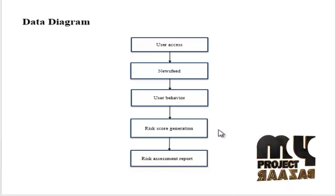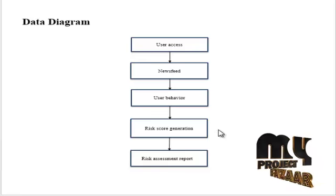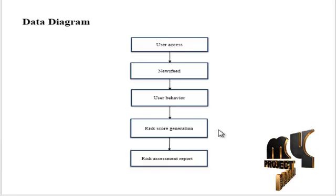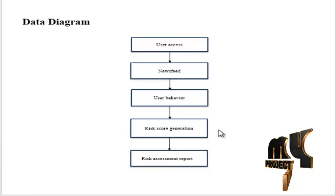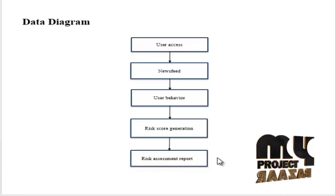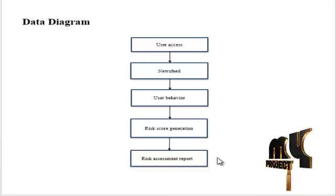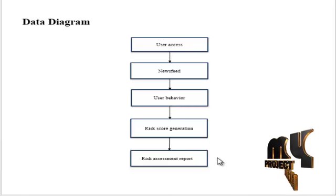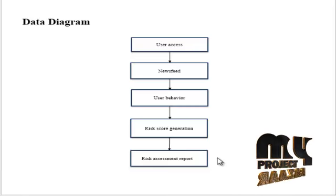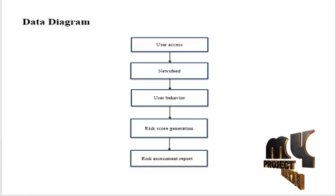In the risk assessment phase, we will be generating a score based on the risk derived from the user behavior input. After generating a risk score, we will be generating a risk assessment report. The risk assessment report will tell us how the risk score has affected the profiles of a user. With that risk score, we can perform privacy management in our project.